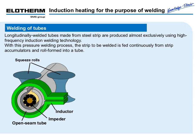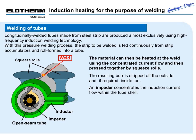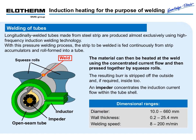Another important application of induction heating is longitudinal welding of tubes. Tubes made from steel strip are produced almost exclusively using high-frequency induction welding technology. With this pressure welding process, the strip to be welded is fed continuously from strip accumulators and roll-formed into a tube. The material is heated at the weld using concentrated current flow and pressed together by squeeze rolls. The resulting burr is stripped off the outside and, if required, inside too. The so-called impeder concentrates the induction current flow within the tube shell. Dimensions range from 10 to 660 mm in diameter and wall thickness from 0.2 to 25.4 mm, with welding speeds up to 200 meters per minute.